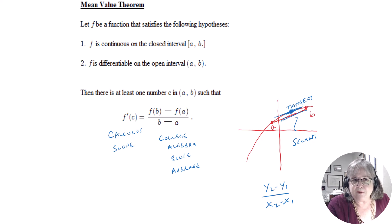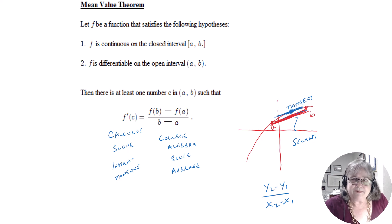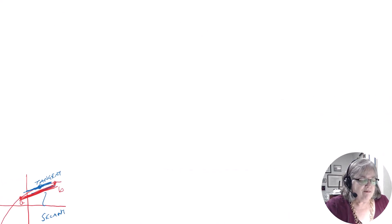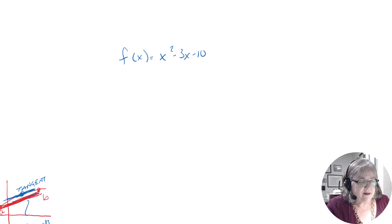You obtain the value from the slope function, and this is instantaneous. So what it's saying — it's really kind of neat — is that you can have an average slope between a and b, and then you can find an instantaneous slope on the curve that's equal. So let's look at an equation and try this out. If we have f of x equals x squared minus 3x minus 10...